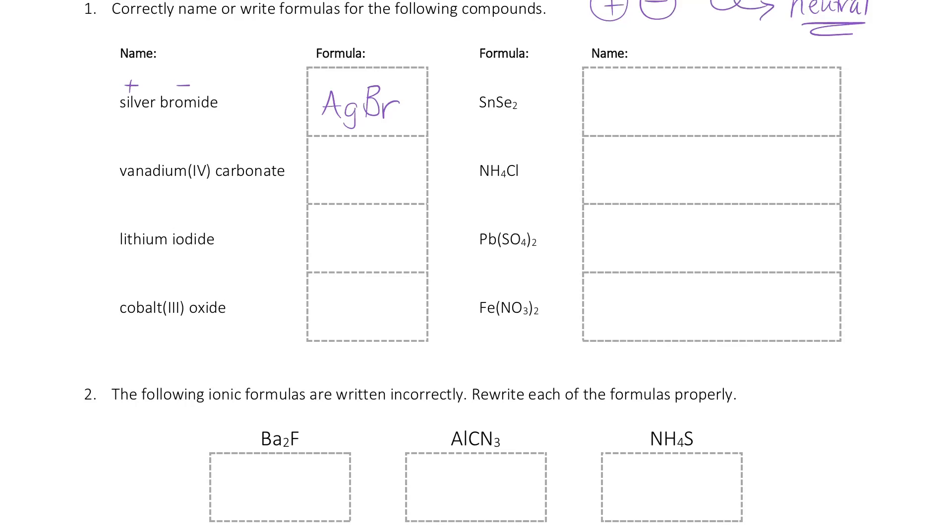Vanadium 4 carbonate, I know that vanadium is going to have a plus 4 charge because of my Roman numeral. I can see on my periodic table in my ion chart that carbonate is CO3 with a minus 2 charge. One of each of those together is not going to be neutral overall. I'm going to need two carbonates to give me a total of minus 4, so I'm going to have V parentheses CO3 2 as my answer there.